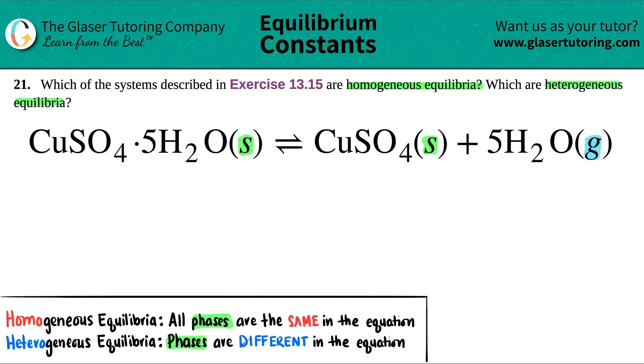Yeah, it's heterogeneous, right? Just as long as you see one thing that's different in those phases, you've got a heterogeneous equilibria. There's one gas and two solids. They're not all the same. So this would be heterogeneous. So it's a heterogeneous equilibria.